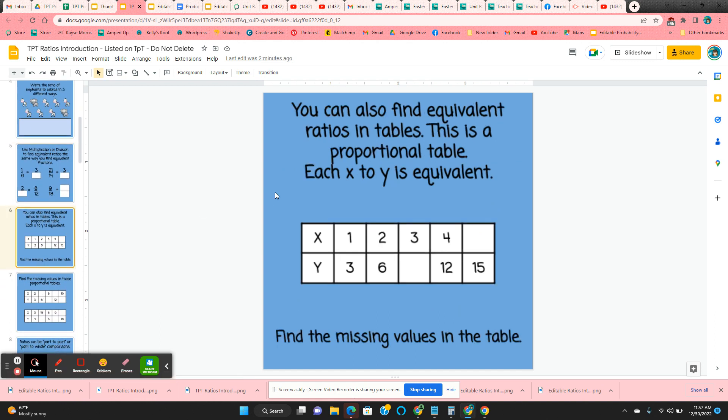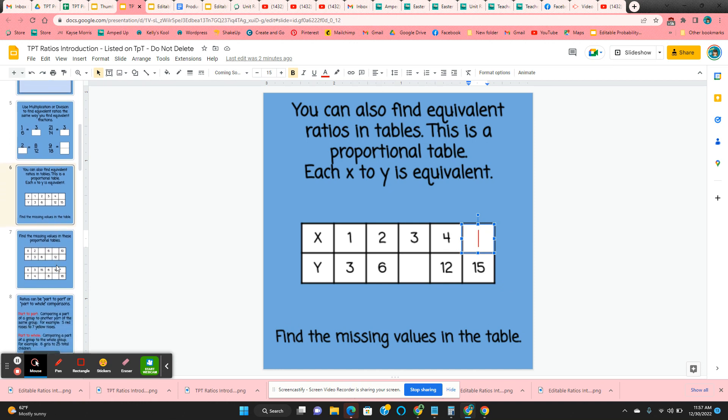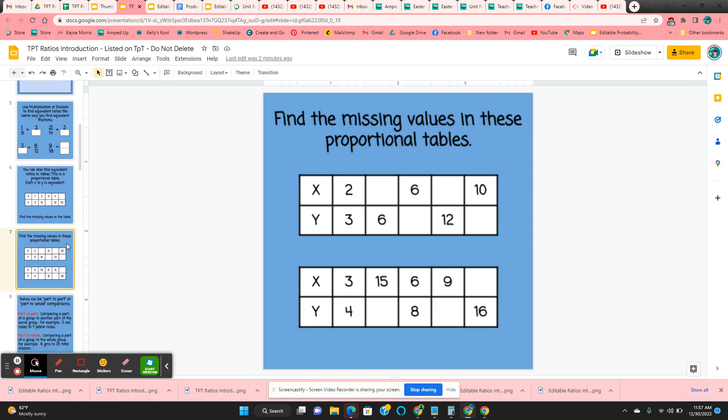They're shown ratios in tables. So this is called a proportional table if each of the ratios are equivalent. And so they need to type in here the missing number that makes this a proportional table so that all of the ratios are equivalent. They've got two more.